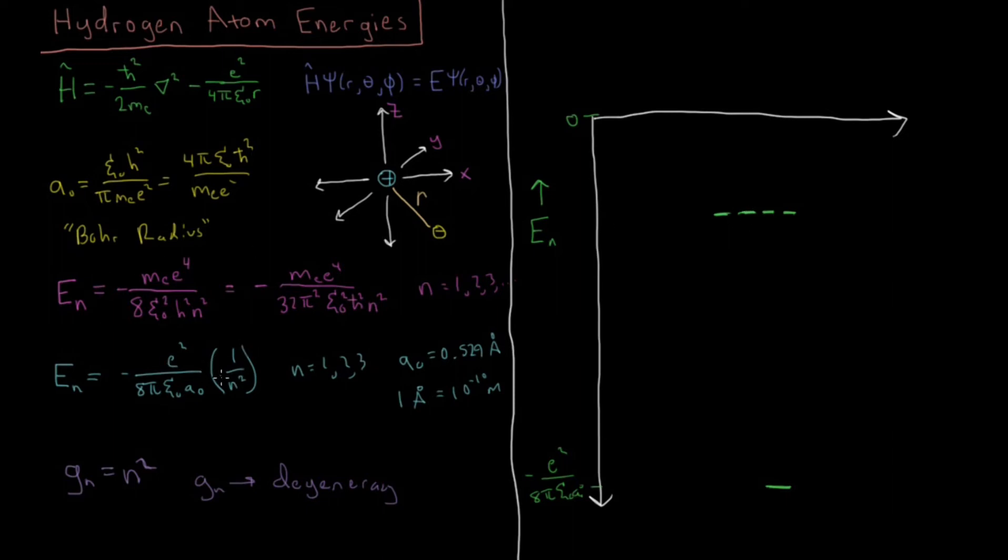n equals 3, 1 over 3-squared is 9. So if I make some type of estimate, 1 over 9 is about there. And there's going to be 9 energy levels there. So 7, 8, 9 at n equals 3.